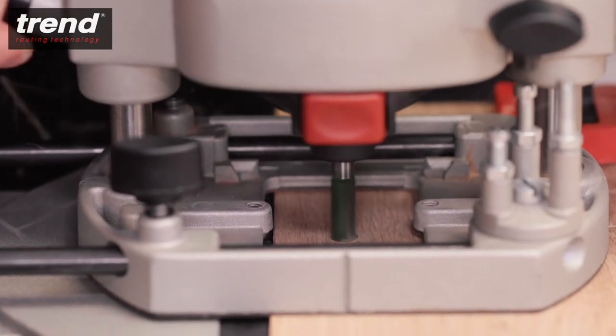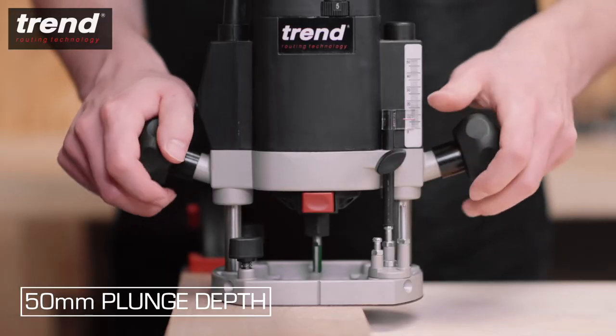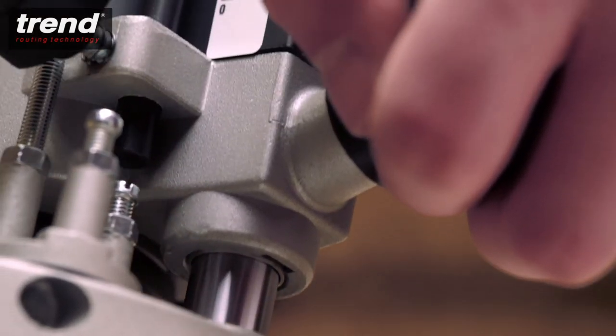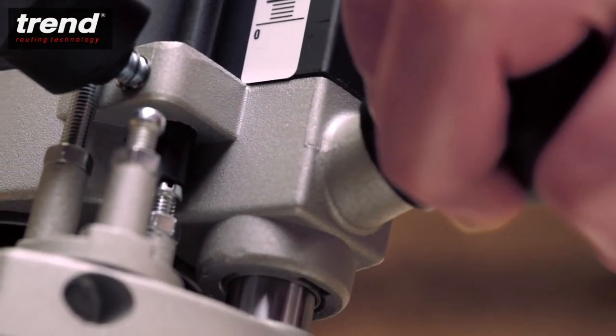To set the depth of the cut, unlock the router by twisting the handle and plunge down until the cutter touches the workpiece. The phosphor bearings on the columns make it smooth to plunge and raise the router body.